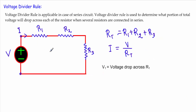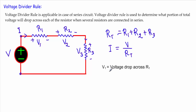Since this is a series circuit, the current I will remain the same throughout the whole circuit. The voltage dropped across R1 is V1 — as current is entering from one direction, that side will be positive and the other side will be negative. Similarly, the voltage drop across R2 is V2, with its positive and negative sides, and the voltage dropped across R3 is V3.